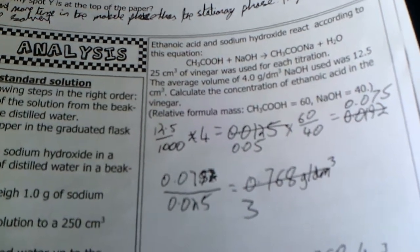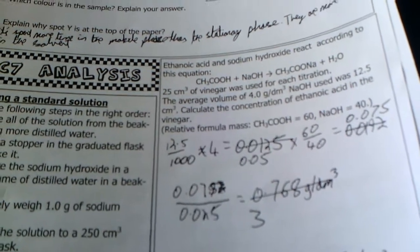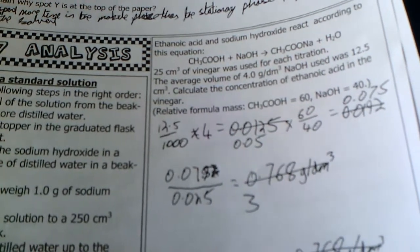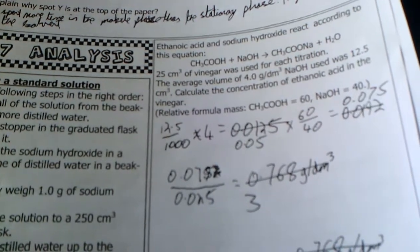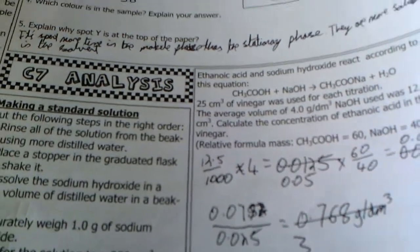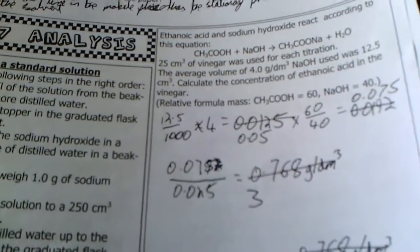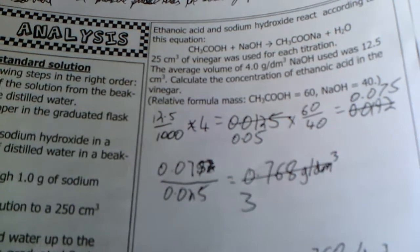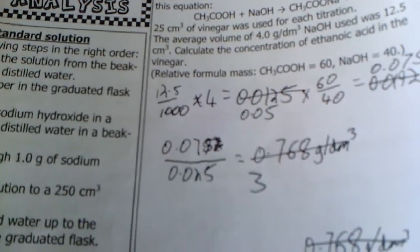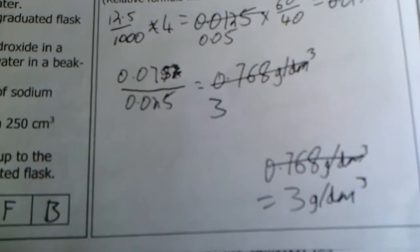Now we want the concentration, so we use the formula again: concentration = mass ÷ volume. That's 0.075 divided by 25 cm³ — but divide 25 by 1000 first — so 0.075 ÷ 0.025 = 3. The answer is 3 grams per decimetre cubed. Hope that was sort of helpful. Thank you very much.